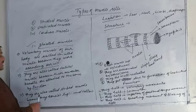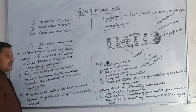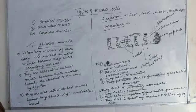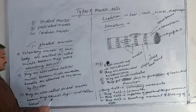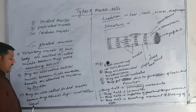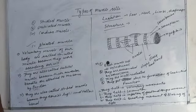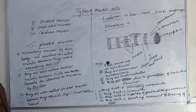Next is striped muscle. We also call it striped muscle because it consists of light and dark bands. Because it has light and dark bands, we call it striated muscle.